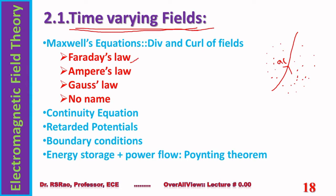We start with Faraday's law, which says a time varying magnetic field is able to generate an electric field. Then we move to Ampere-Maxwell's law, which says a time varying electric field is equivalent to a magnetic field.